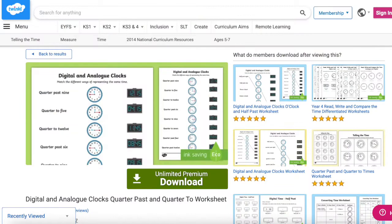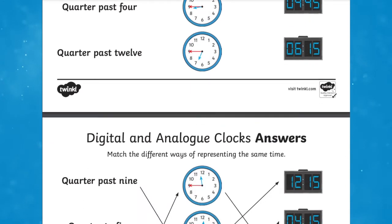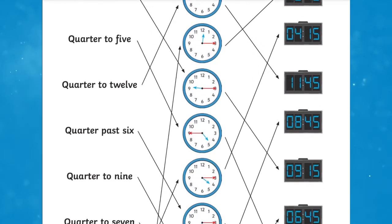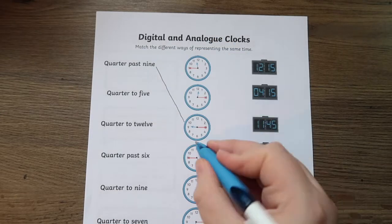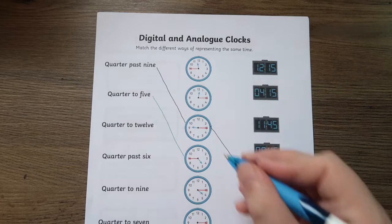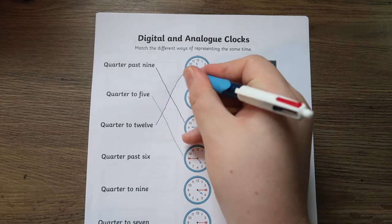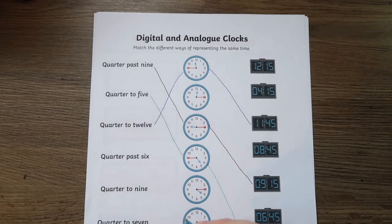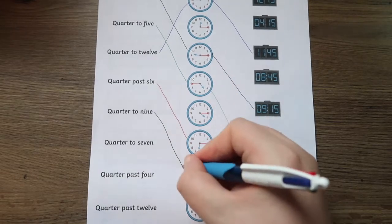The Digital and Analog Clocks Quarter Past and Quarter To worksheet is a great resource to challenge your pupils to read time in different representations. Focusing on quarter past and quarter to, your pupils will need to read the time in words on an analogue clock and in digital. This is a great activity to assess your children's understanding, and you could also set this as a home learning activity.